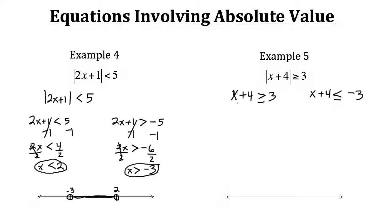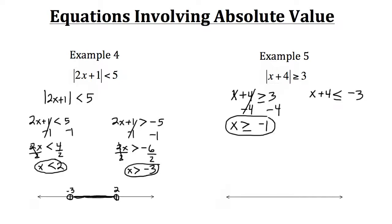So now let's first solve this side. We have x plus 4, and to get x by itself we need to get rid of that 4. So we subtract it from both sides, and that leaves us with x is greater than or equal to negative 1, because positive 3 minus 4 is negative 1. So there's one part to our solution.